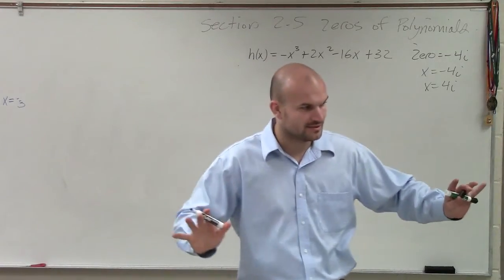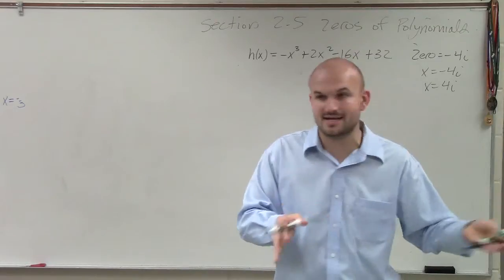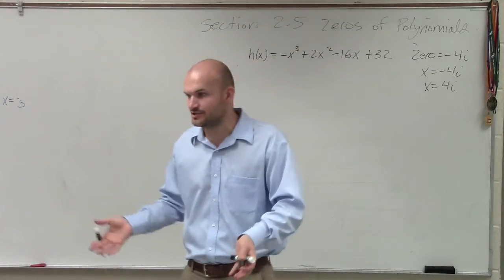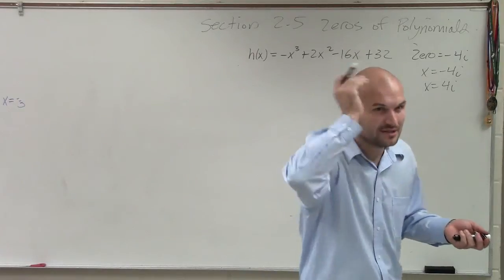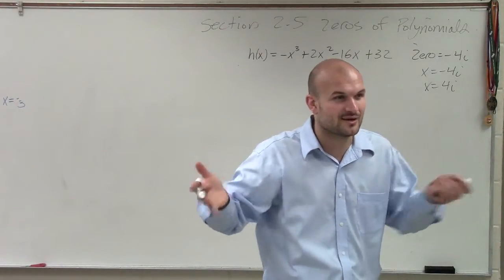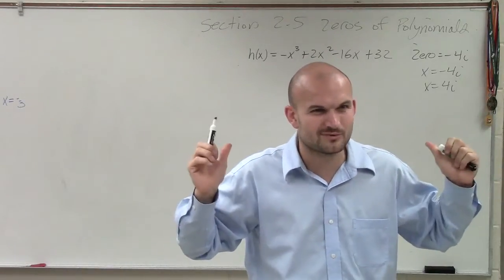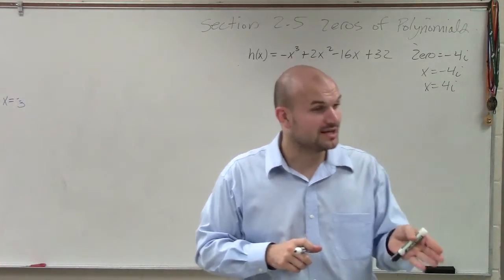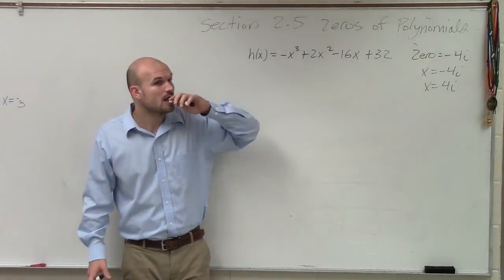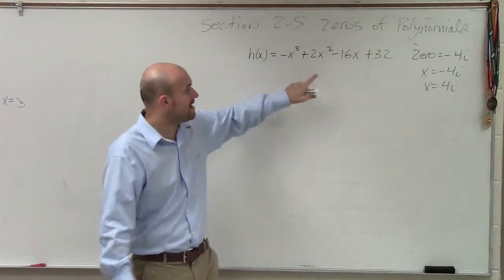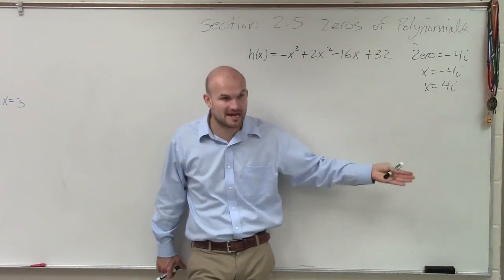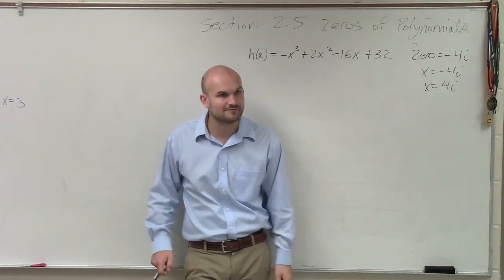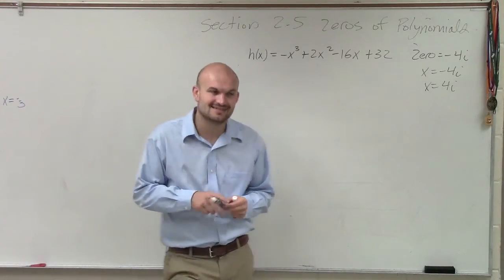Forget about the i for a second. When we were doing these types of problems, when I gave you a zero and said here's our function, what did we do to find the remaining factors to help us find the other zeros? To find the remaining zeros, I have to find the remaining factors. Once I find the remaining factors, I can set the factor equal to zero to solve. So how do I find the remaining factors? I have to apply something. Synthetic division. Exactly — synthetic division.